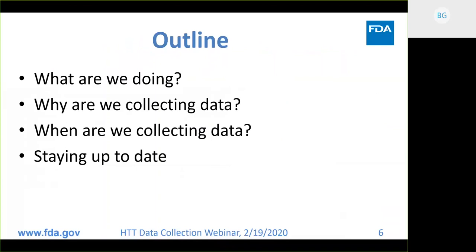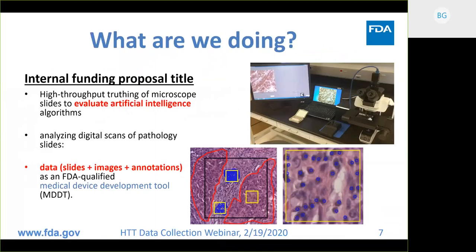I'm going to talk about what we're doing, why we're going to collect this data, when we're going to collect data, and how you can stay up to date. What we're doing is hopefully encapsulated in the title: High Throughput Truthing of Microscope Slides to Evaluate Artificial Intelligence algorithms. These algorithms are going to analyze digital scans of pathology slides. We're going to create data — the slides themselves, the images of those slides, and annotations from pathologists — and we will pursue an FDA qualified medical device development tool.